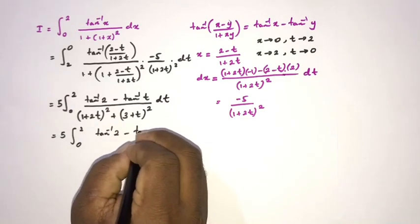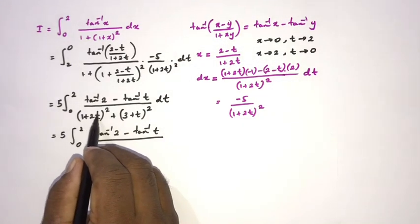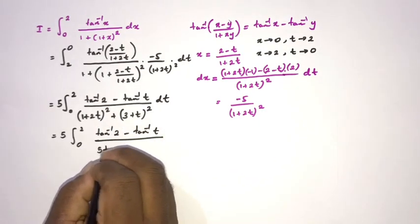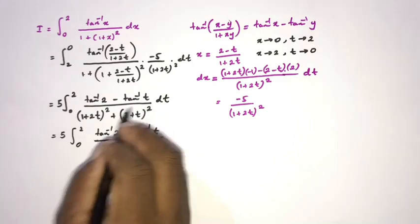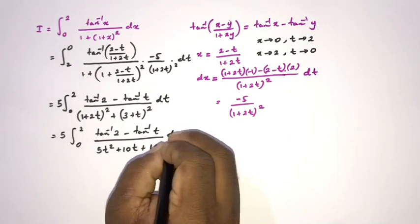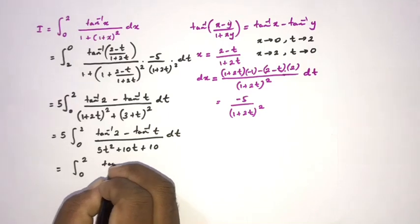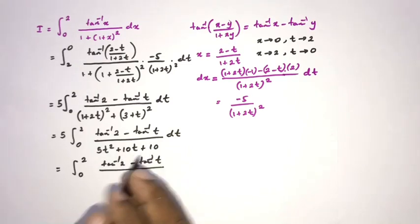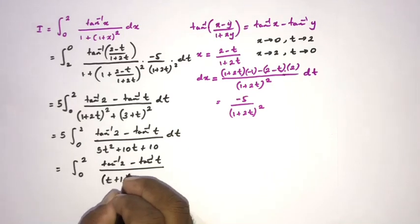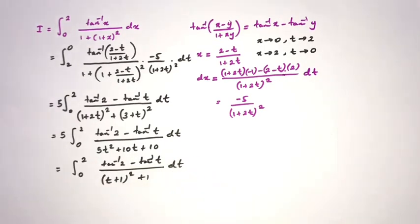The 5 factor cancels with the denominator's 5, leaving us with the integral from 0 to 2 of (inverse tan 2 minus inverse tan t) over (t squared plus 2t plus 2) dt. We write the denominator as (t plus 1) squared plus 1, completing the square.